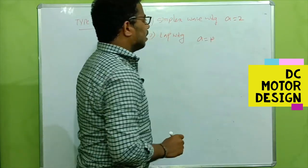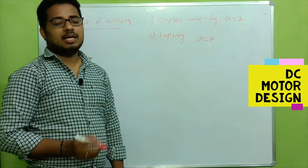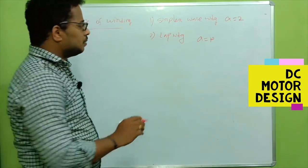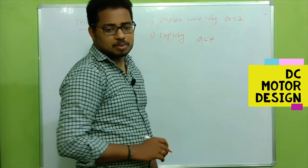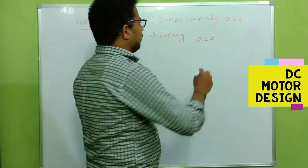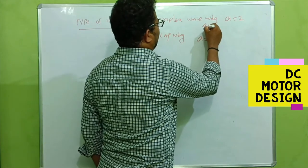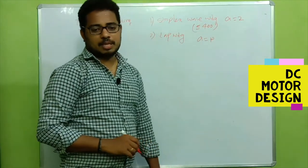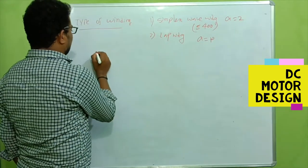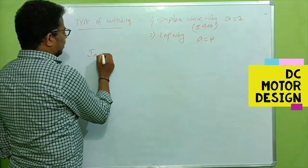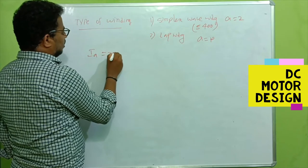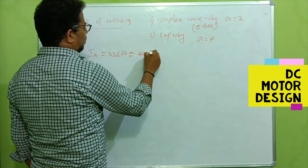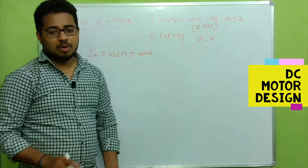For lap winding, the number of parallel paths equals the number of poles — that is the main difference. Up to 400 amps we can go for simplex wave winding. In our case the armature current is 336 amps, which is less than or equal to 400, so for this job we can go for simplex wave winding.